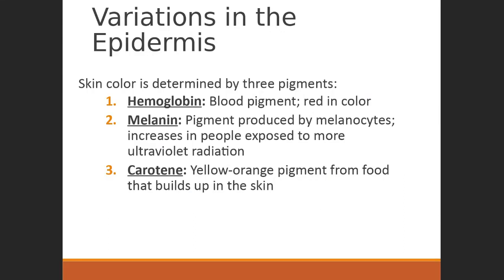There are variations in the epidermis, mostly based on differences in pigment. Hemoglobin is a red pigment in the blood, and how much shows through depends on the pigment of the epidermis. In darker-skinned people you see much less hemoglobin pigment showing through. Someone with albinism has no pigment in the epidermis, and several parts of their body take on a pinkish color because the hemoglobin shows through more easily through the more transparent epidermis.